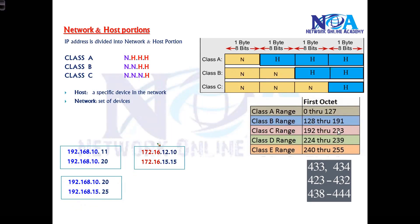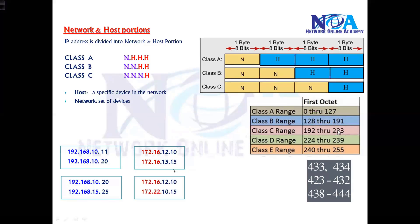Now let's take a Class B example. The value 172 falls in the B class range of 128 to 191. In Class B there are two network portions and two host portions. If the first two portions of two addresses match, they are in the same network. If the first two portions are different, they are not in the same network.